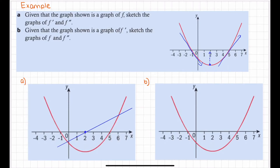Now we want to graph the double derivative. Think about a linear graph — the derivative of a linear function gives a constant. This first derivative is a linear line with a positive gradient, which means the derivative of this graph will be in the positive axis. Since the first derivative has a constant positive gradient throughout, the graph of the second derivative will just be above the x-axis in the positive quadrants.